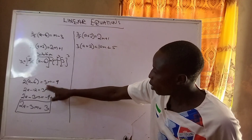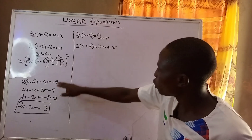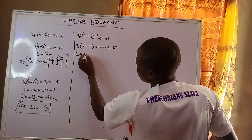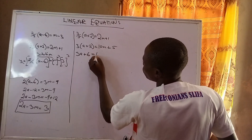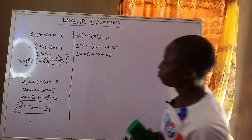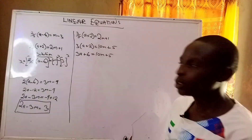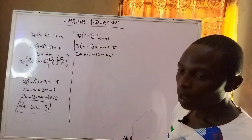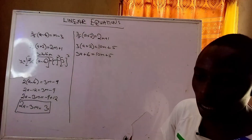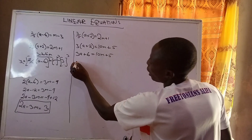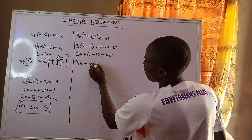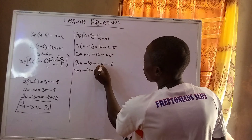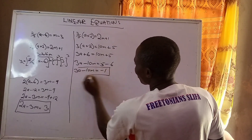Now we open the bracket: 3 times a is 3a, plus 3 times 2 is 6, equals 10m plus 5. There is nothing difficult here. I will rearrange — pick terms in a, terms in m, and constant terms. So: 3a minus 10m equals 5 minus 6, which is minus 1. This is my second equation.